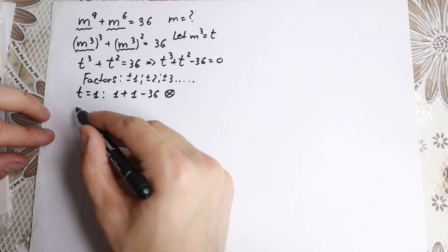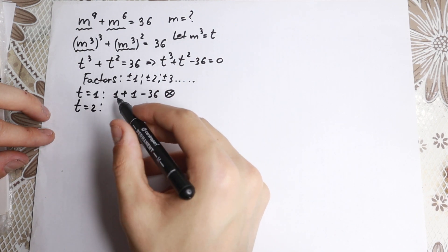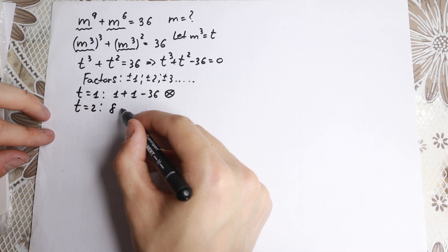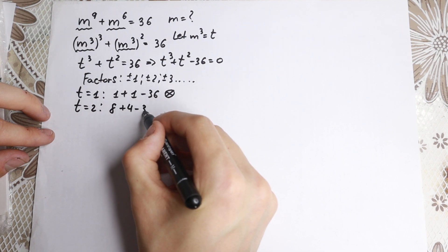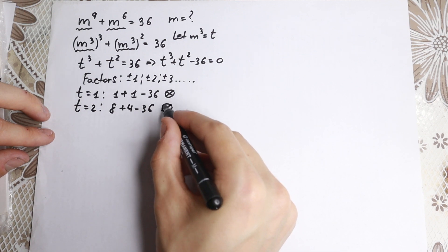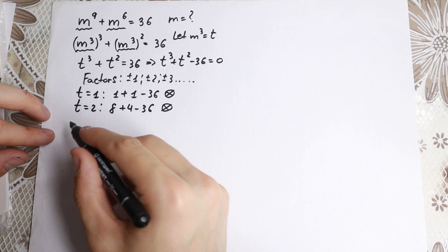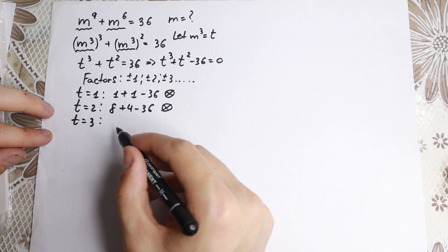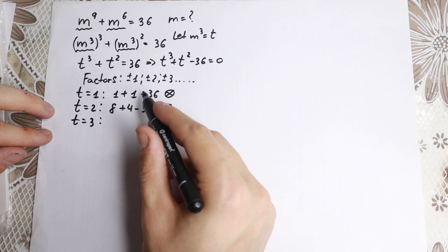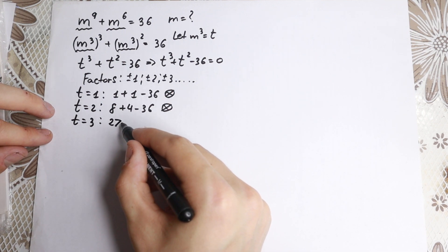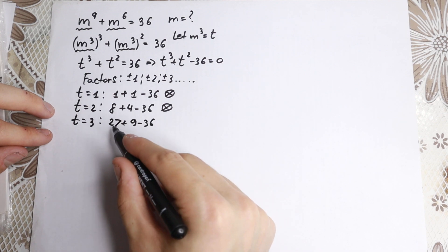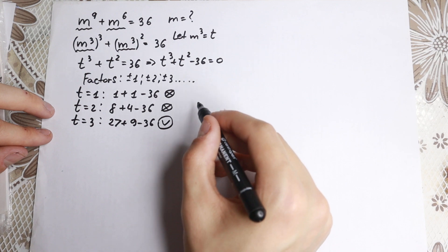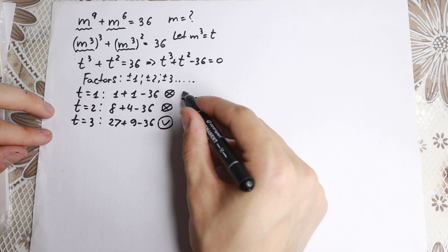For t equal to two: two-cubed is eight, plus two-squared is four, so eight plus four minus 36 — that's 12 minus 36, which is not equal to zero. For t equal to three: three-cubed is 27, plus nine, minus 36 — 27 plus 9 minus 36 equals zero. So we found one factor: t minus three.